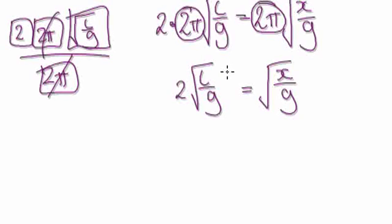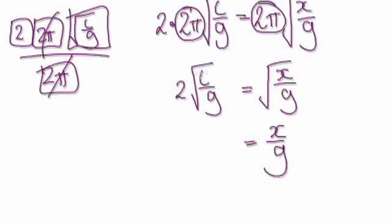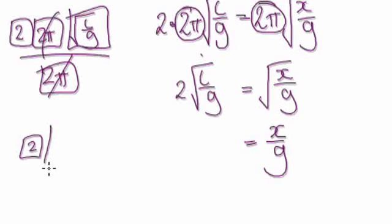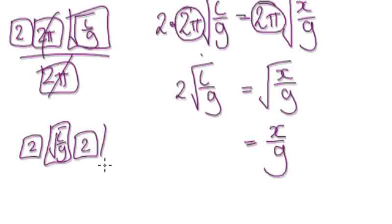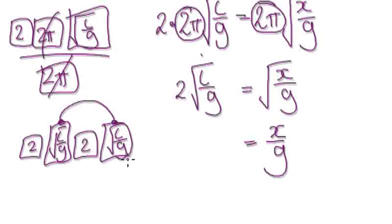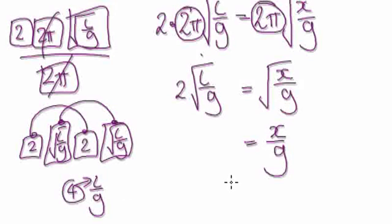Now square both sides. The right side gives x/G. On the left, you have 2 × √(L/G), so squaring gives 2² × (L/G), which is 4 × (L/G). That is 4L/G. The square root squared just gives L/G, and 2 squared gives 4.